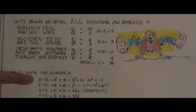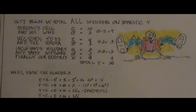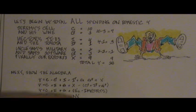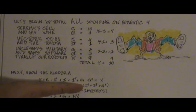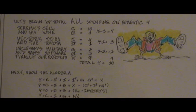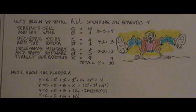I've shown the algebra at the bottom. I've defined imports as what we spend on goods bought from foreign countries, so I've grouped them as CF, IF, and GF. Then I've rearranged those. By definition, I now have Y equals C plus I plus G plus net exports.